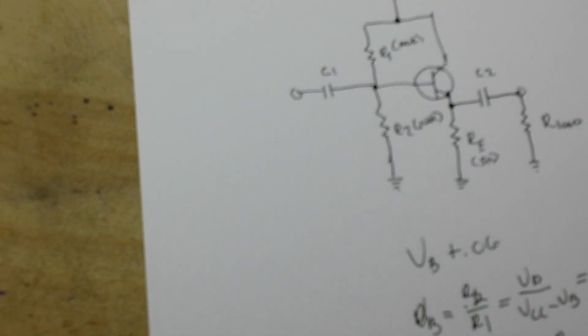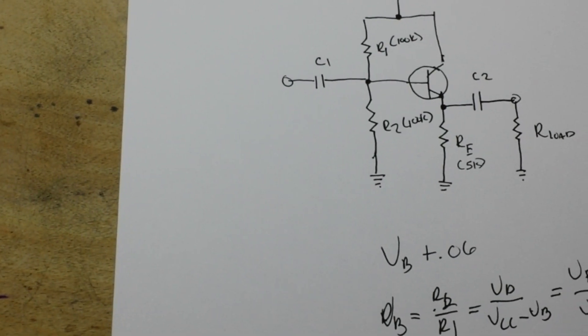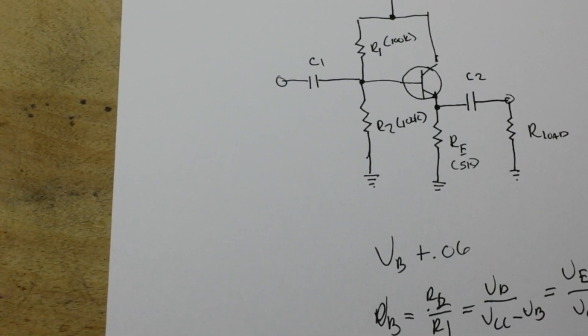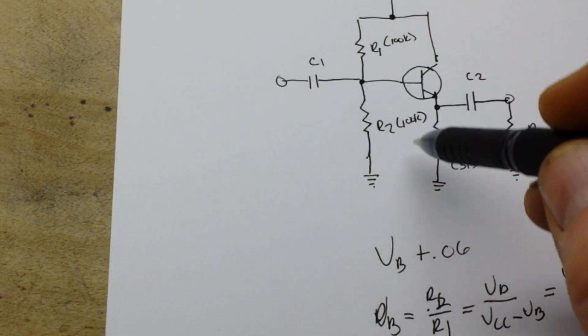So the next thing we need to do is choose our AC coupling capacitors. These are our AC coupling capacitors to block out our DC level and also our unwanted frequencies. And in this case, C1 is going to form a high pass filter here as well.